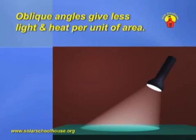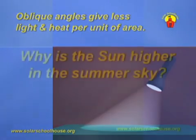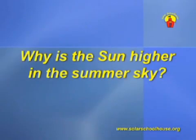The same thing happens with the sun. The higher it is in the sky, the more direct and intense the sunlight will be. So why is the sun higher in the summer? To find out, we need to remember two things: first, the Earth is tilted on its axis, and second, the Earth is orbiting the sun.